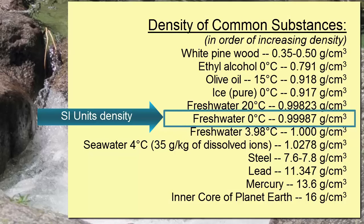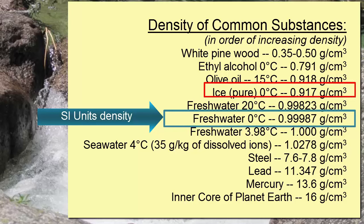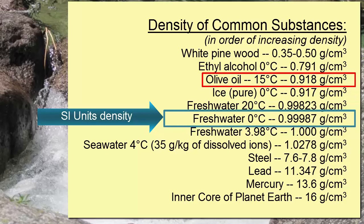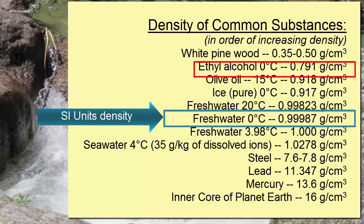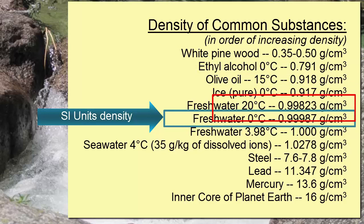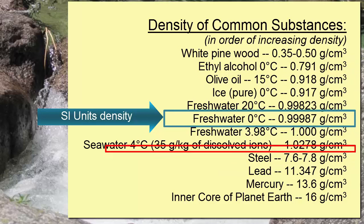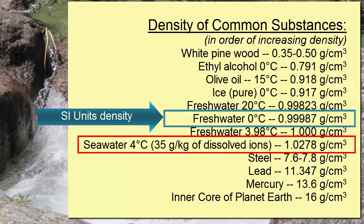Here is a list of the density of other common materials. Notice that ice is less dense, at 0.917 grams per cubic centimeter. Olive oil is less dense as well — that's why it floats on water. Alcohol is even less dense, which is why alcohol floats on olive oil. Also, notice how much denser metals are. And finally, notice that seawater is denser than freshwater.